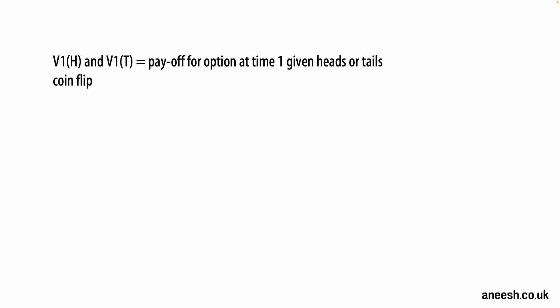From page five we're introduced to new variables V1(H) and V1(T) that represent the payoff from a security at time one. For example, if you hold an option with a strike price of five, then the payoff V1(H) will be three if the stock price is eight at time one, and the payoff V1(T) will be zero if the price of the stock is one at time one.